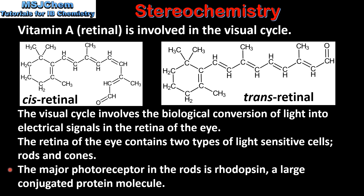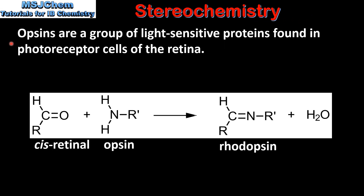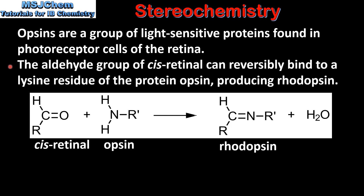The major photoreceptor in the rods is rhodopsin, a large conjugated protein molecule. Opsins are a group of light sensitive proteins found in photoreceptor cells of the retina. The aldehyde group of cis retinal can reversibly bind to a lysine residue of the protein opsin, producing rhodopsin.